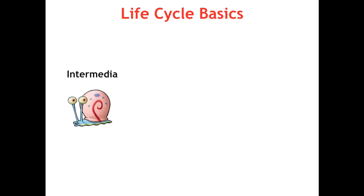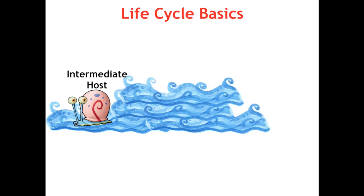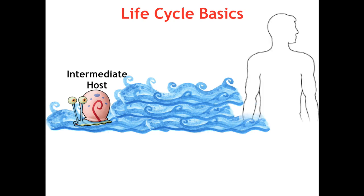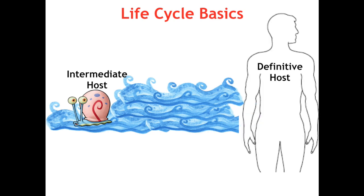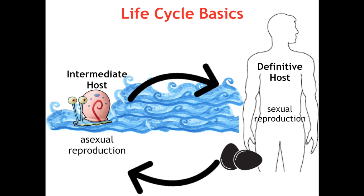All of the flukes also share similarities in their life cycles. First, all of them use a species of snail as the intermediate host, so water or marsh is involved in some way. Humans are the definitive hosts in all cases — they mature and undergo sexual reproduction in us, excreting eggs from various sites. Those eggs hatch or mature in water, undergo asexual reproduction in their snail hosts, who then excrete forms which eventually mature to become infective to humans.